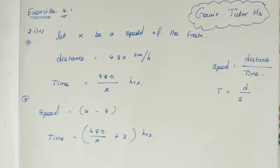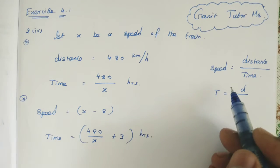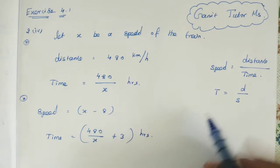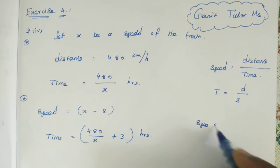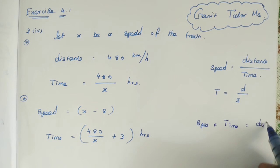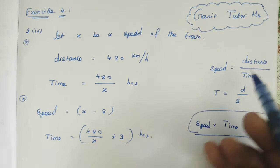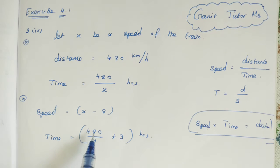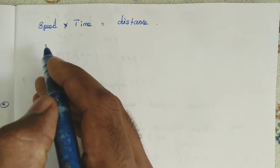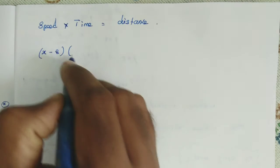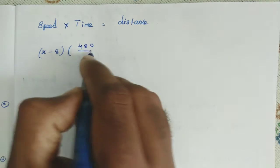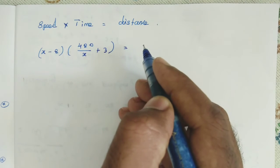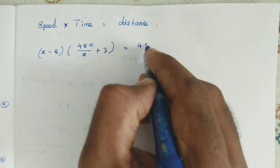From the second condition, we know speed, time, and distance. Using speed into time equals distance, we apply: speed is x minus 8, time is 480 divided by x plus 3, and distance is 480. So the equation is: (x minus 8) multiplied by (480 divided by x plus 3) equals 480.